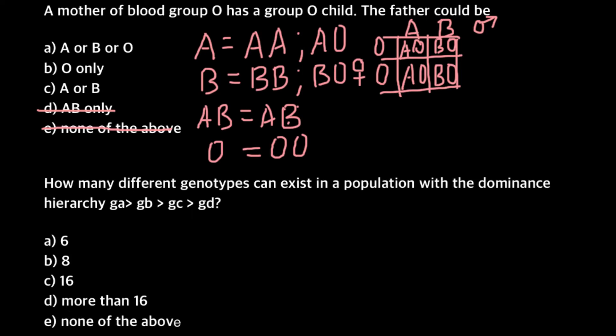Now we can move to answer C, which is 'A or B.' For example, if the mother's genotype is OO and the father is blood group B, we can choose between genotype BB or BO. It is obvious that we can get a group O child if we choose the BO genotype. So let's do it — we put the father's genotype BO on top of the Punnett square.